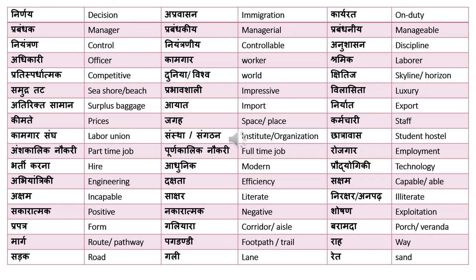'Galiara' means corridor or aisle. 'Baramada' means porch or veranda. 'Marg' means route or pathway — for example, 'this route will take you to this place.' 'Pagdandi' means footpath or trail. 'Rah' means way or path. So there are several similar words here: 'marg' is route or pathway, 'pagdandi' is footpath, and 'rah' means way.